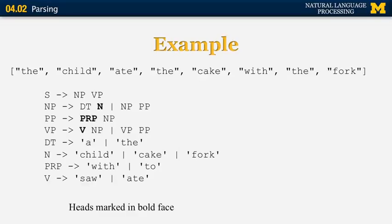The phrases NP, PP, and VP are all considered to be headed constituents. This means one of their components is more important than the others — not surprisingly the noun for the noun phrase, the preposition for the prepositional phrase, and the verb for the verb phrase. The concept of heads of constituents is very important and will come up again in later slides.